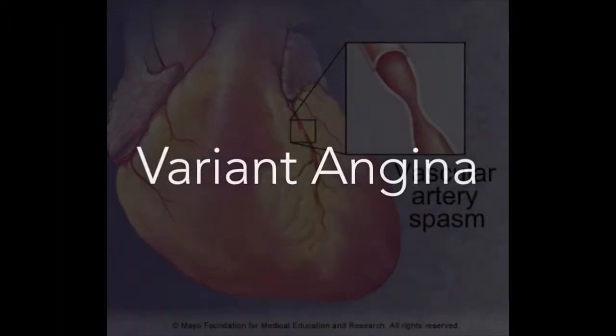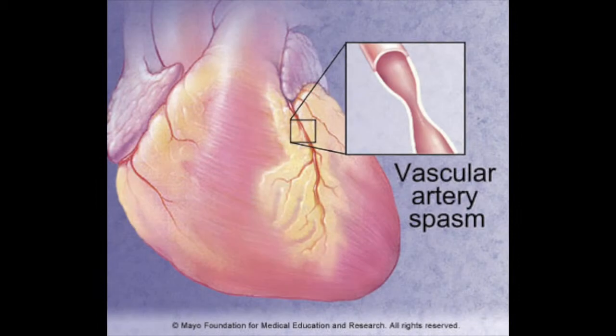The third type, variant or Prinzmetal's angina, is caused by a spasm in a coronary artery which causes the artery to narrow, bringing on chest pain.